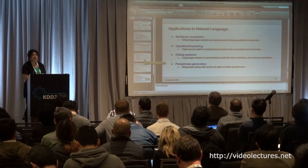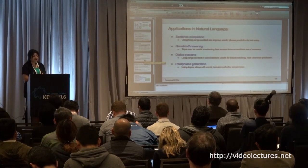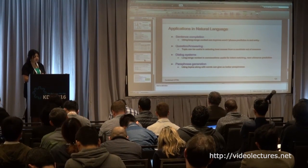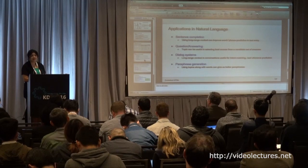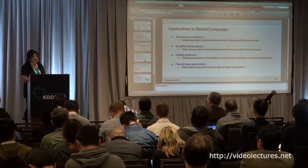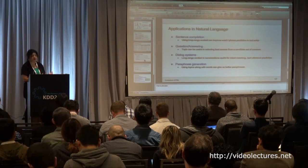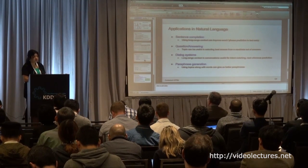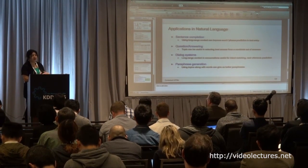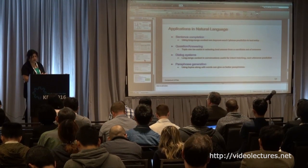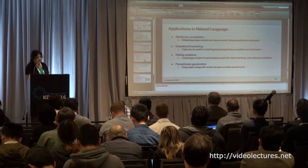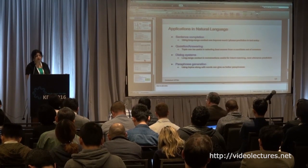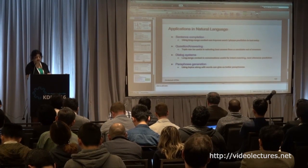There are various applications. The word prediction task can be used for sentence completion, as we see in phones these days. For next sentence selection, apart from dialogue systems, another application area is question answering — selecting the best response. A lot of this work was motivated by dialogue systems work I was doing previously at Google. The last application is paraphrase generation, which we also explored and have some results, though those could not be published.